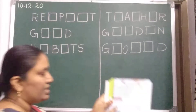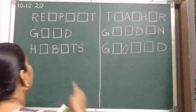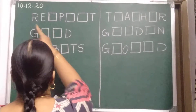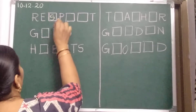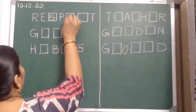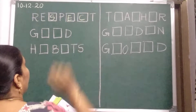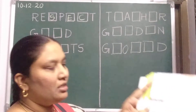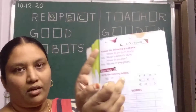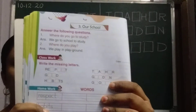Now, first word — this is RESPECT: R, E, S, T, E, C, T. All capital letters you should write because all the letters are capital only. So, you should write capital only.